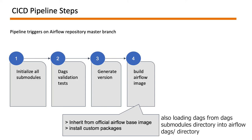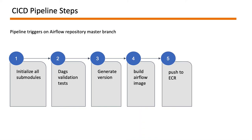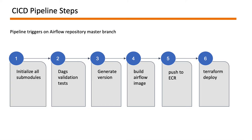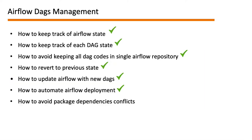The next step is building the Airflow image, which inherits from the official Airflow base image with custom packages added on top. After releasing the image tag, it pushes the image to ECR. From there, the pipeline also makes a commit into our Terraform repository, updating the Airflow version in production, which then triggers the Terraform Cloud pipeline, and the new version of Airflow gets deployed.